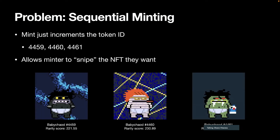Given that, the problem we have right now is sequential minting. Ethereum also started this way. Every time you mint, it just increments the token ID by one. In a trivial case where you mint one NFT per block — say you're on block 4459 and someone minted Baby Chode 4459 — someone savvy can look at IPFS and figure out that Baby Chode 4461 has the highest rarity score. Knowing that, they can wait two blocks and then mint the exact NFT they want and snipe it.